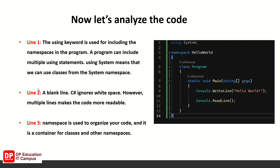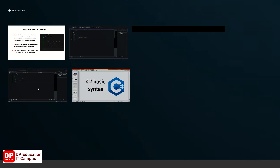A blank line — C-Sharp ignores white space. However, multiple lines make the code more readable. Namespace is used to organize your code, and it is a container for classes and other namespaces.